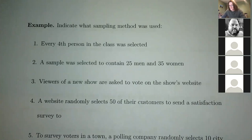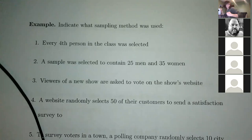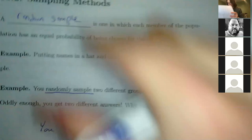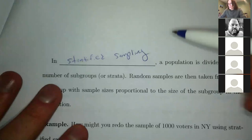We also talked about a bunch of sampling methods last time. So we can go through them again. We talked about random sampling — a random sample is exactly what it sounds like: you have a population and you pick things at random.